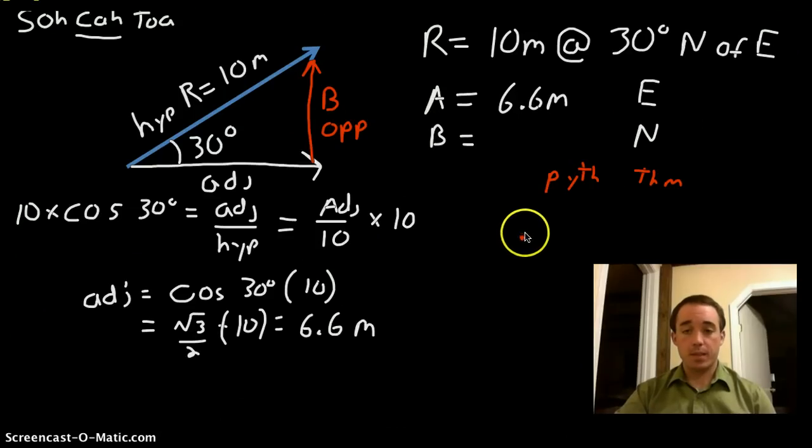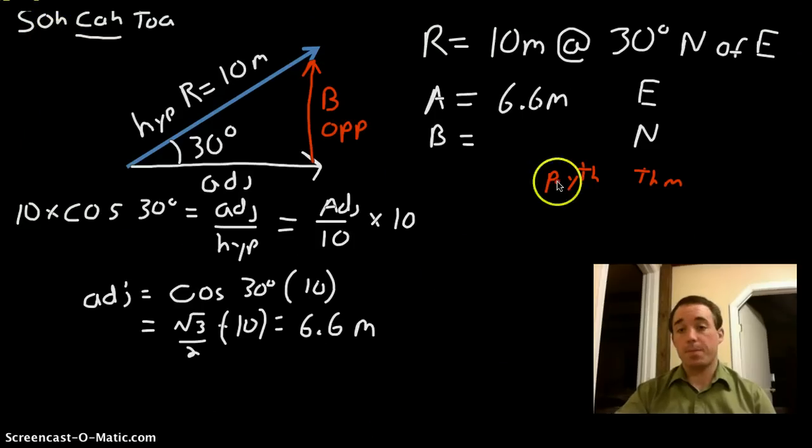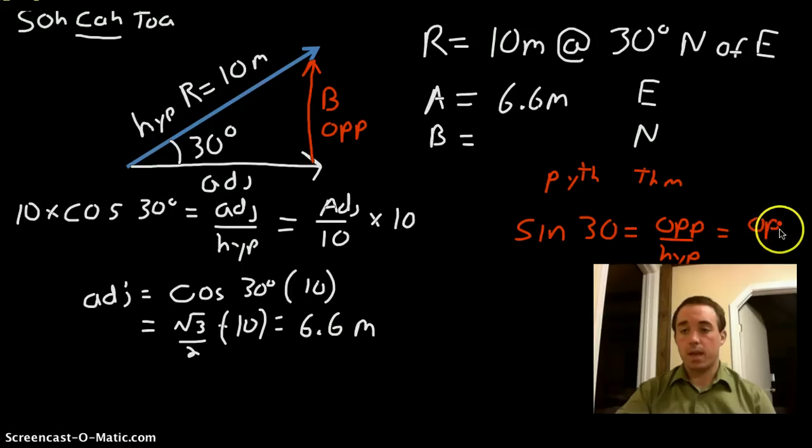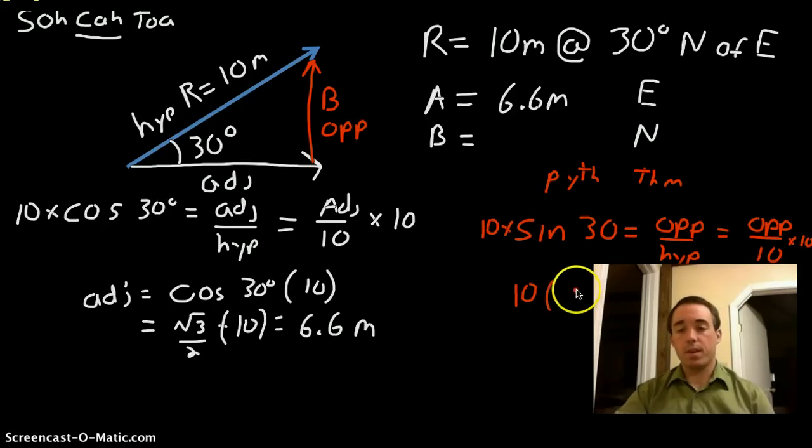Again, we have the opposite side and we have hypotenuse. So on SOHCAHTOA, opposite hypotenuse, we want to use the sine. So let's set up the equation. Sine of 30 equals opposite over hypotenuse. But again, we know the hypotenuse to be 10. So it's opposite over 10. Same idea, multiply by 10 on both sides. So you're going to get 10 times the sine of 30 is one half, so 0.5, equals my opposite side. So 10 times 0.5 is nothing more than 5 meters. So our opposite side, which is the magnitude of vector B, is 5 meters.